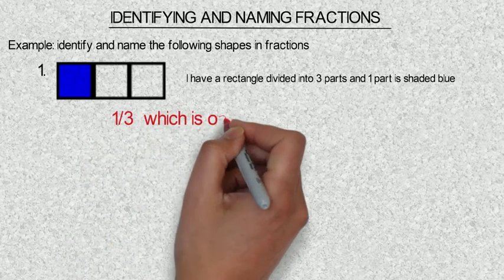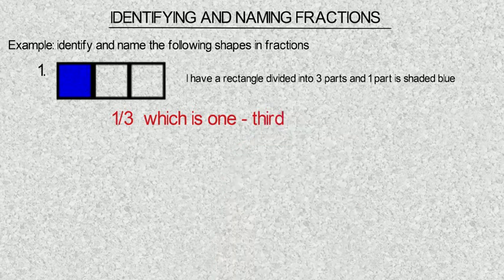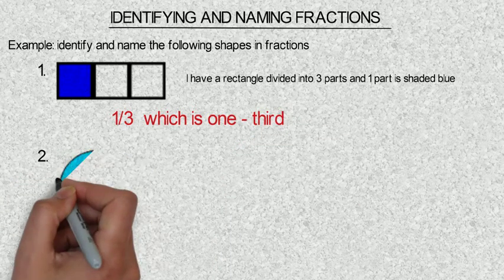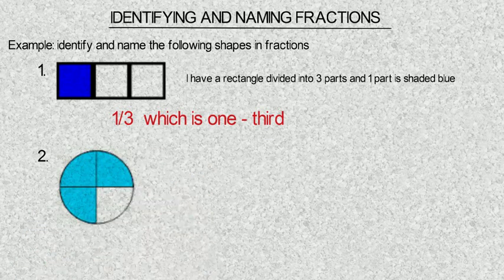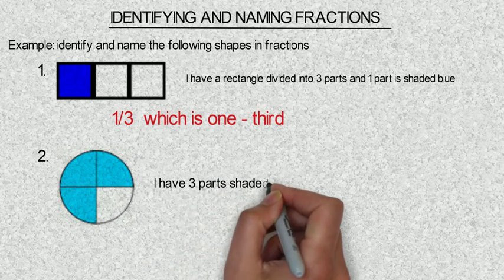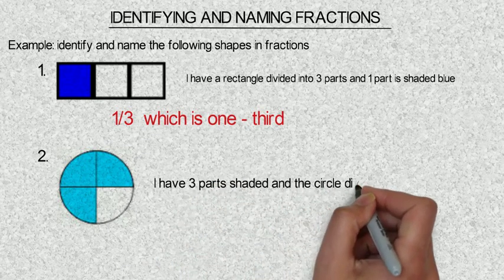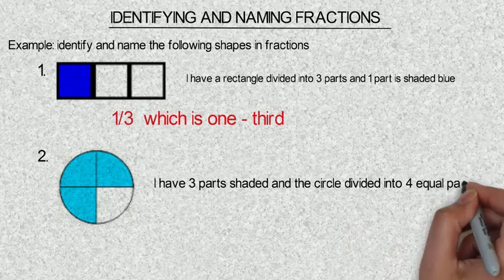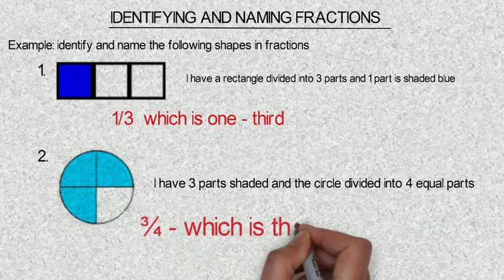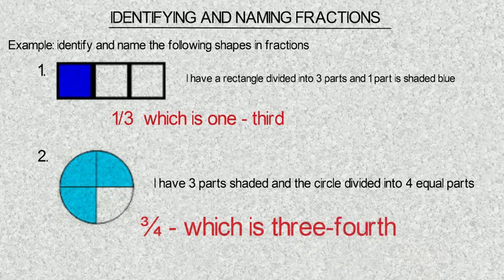Example two. Can you identify this? I have three parts shaded and the circle divided into four equal parts. So I have it to be three over four, which is three fourths.